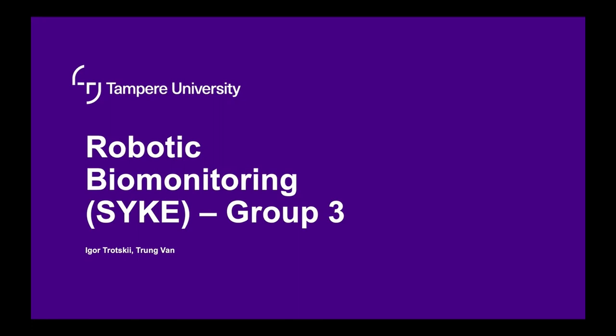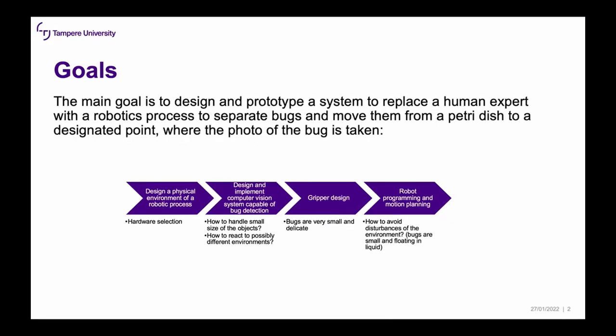Hello everyone, we are Group 3 with the Robotics via Monitoring project. The main goal is to design and prototype a system to replace a human expert with a robotics process to spread bugs and move them from a petri dish to a designated point where a photo of a bug can be taken. This is needed so we can build a database of images of many aquatic bugs.